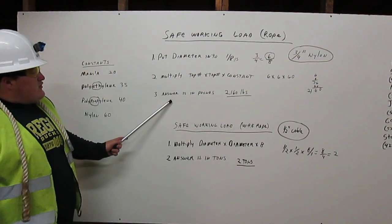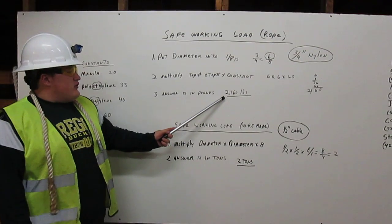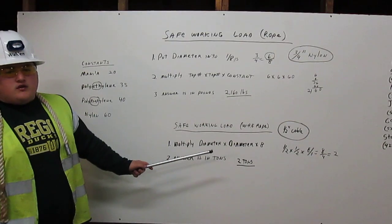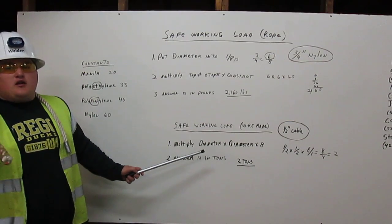The answer is in pounds. So you get two thousand one hundred and sixty pounds, which is the safe working load for this nylon rope.